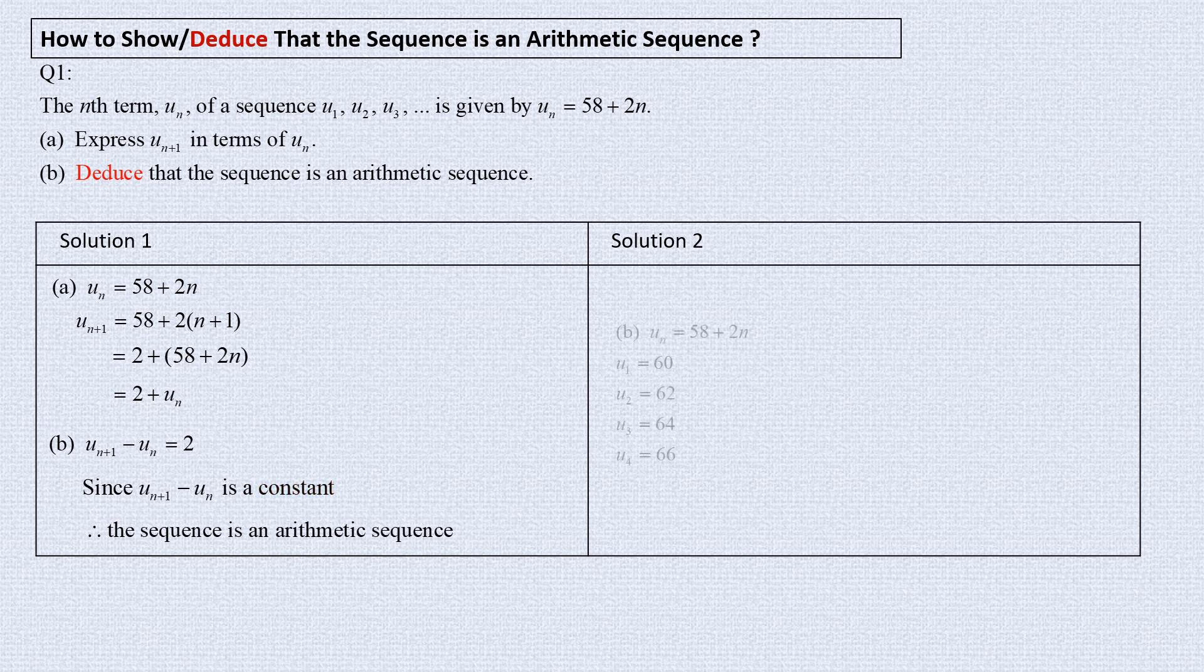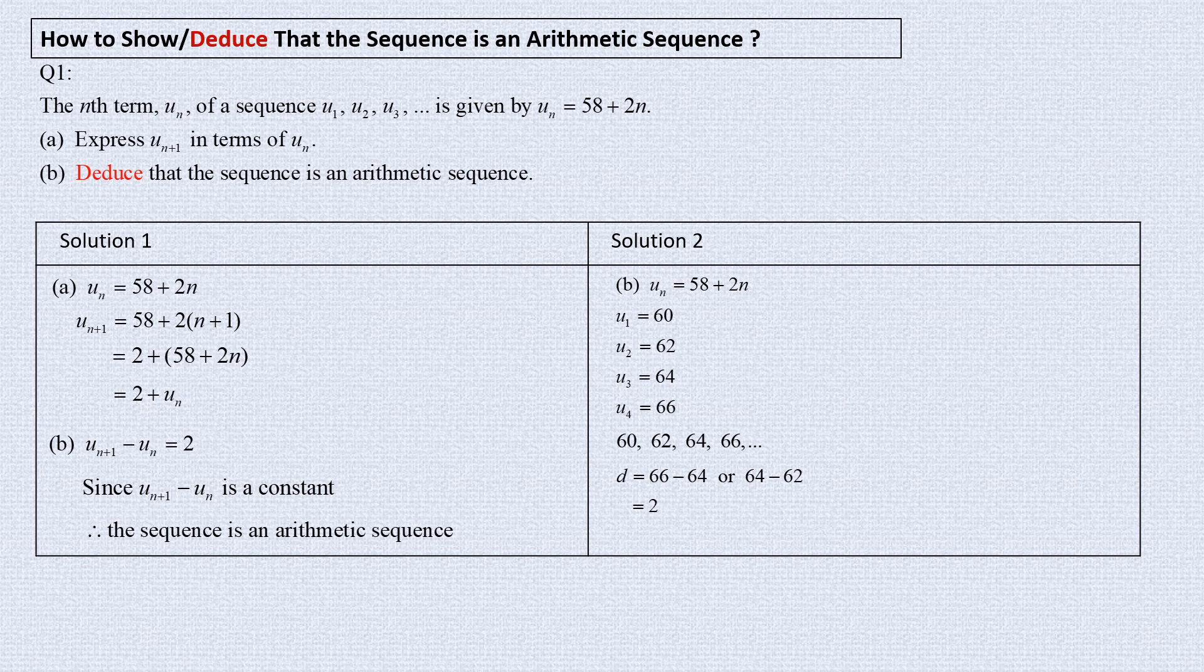Some students prefer to do it this way, in solution 2. It lists out the first few terms. And then from here, it looks for the difference between two terms and makes the conclusion that it has the common difference. So, it is an arithmetic sequence.